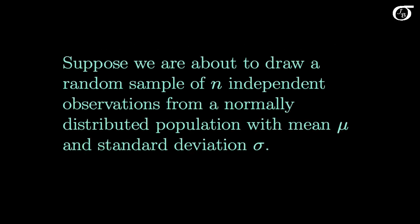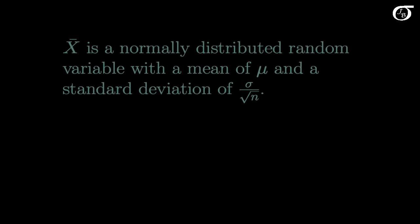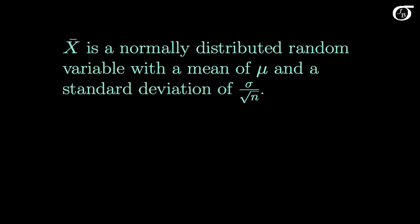Suppose we are about to draw a random sample of n independent observations from a normally distributed population with mean mu and standard deviation sigma. Before we've drawn the sample, we can view the sample mean x bar as a random variable. Under these conditions, x bar is a normally distributed random variable with a mean of mu and a standard deviation of sigma over the square root of n — we sometimes call this sigma x bar, the standard deviation of the sampling distribution of x bar.